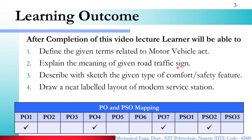The third learning outcome is: describe with sketch the given types of comfort and safety features. Automobiles have many features related to comfort levels and safety levels, and we will study what these features are doing. And lastly, we will look at automobile services.